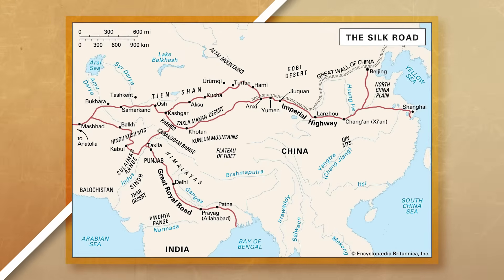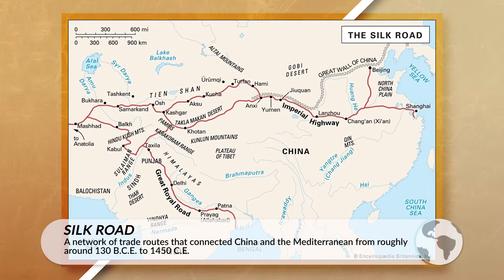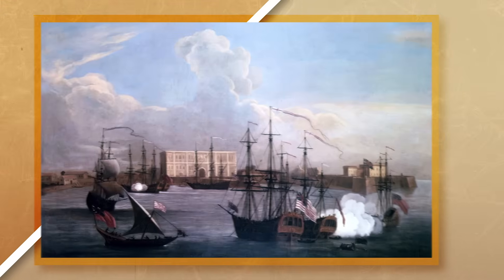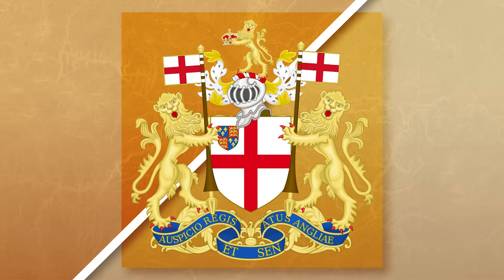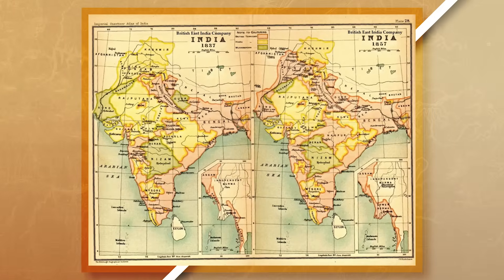We could also look at other trade routes, such as the Silk Road, which allowed for diffusion to occur throughout Asia, the Middle East, and into Eastern Europe and Africa. This trade route not only spread different crops, but new inventions and agricultural practices, which ended up reshaping the cultural landscapes of societies throughout the world. Or we could look at the impact of companies such as the British East India Company, which traded throughout the world, spreading crops, animals, technology, and plants.